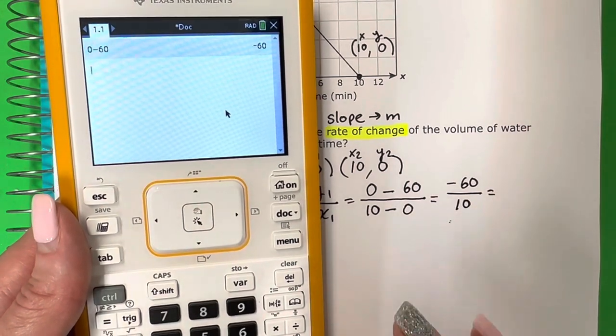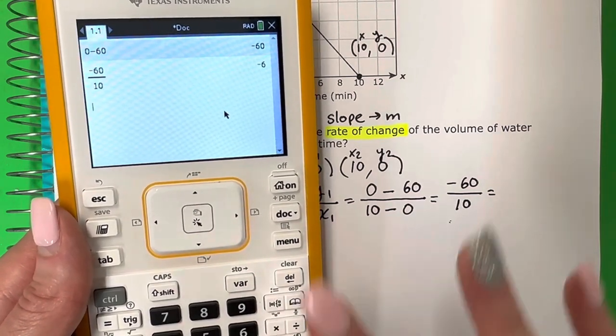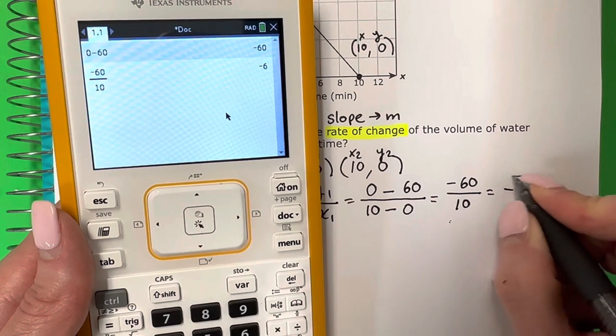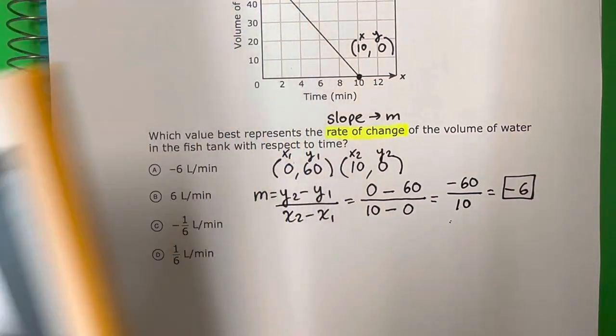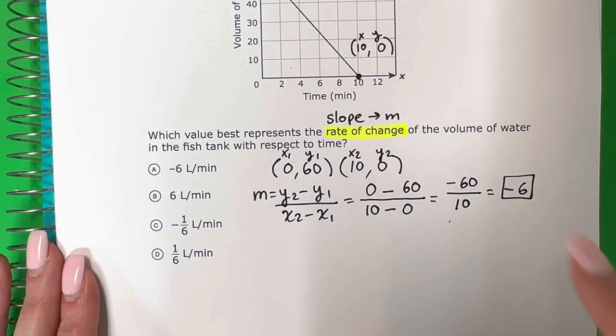And let's put that in the calculator. Negative 60 divided by 10. Negative 6. So please remember if you don't know your math, please just use your calculator. Okay, so that is your slope or your rate of change. Negative 6.